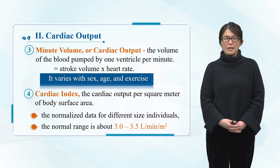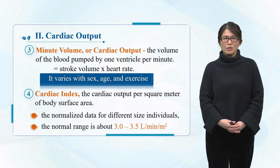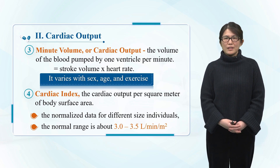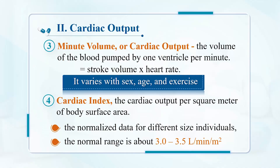The cardiac index measured under rest and fasting conditions is called the resting cardiac index. The resting cardiac index is 3.0 to 3.5 liters per minute per square meter. The cardiac index increases with youth, exercise, pregnancy, emotional agitation, and eating.